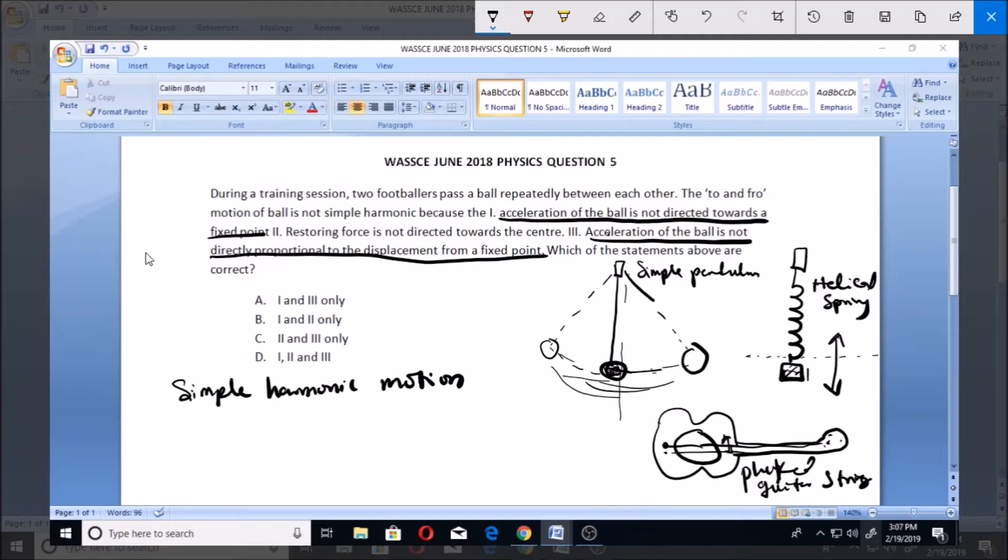So these are the two things that can make something a simple harmonic motion, whether it's proportional to the displacement, or when the acceleration of the board is not directed towards the center. So for the simple harmonic motion, the acceleration has to be directed. So if you are talking about simple harmonic motion, this 'not' and this 'not' here should not be there.